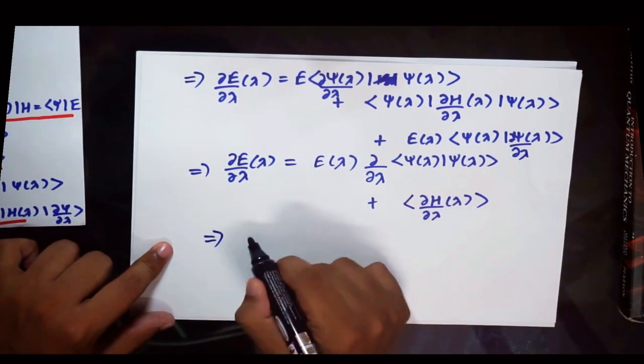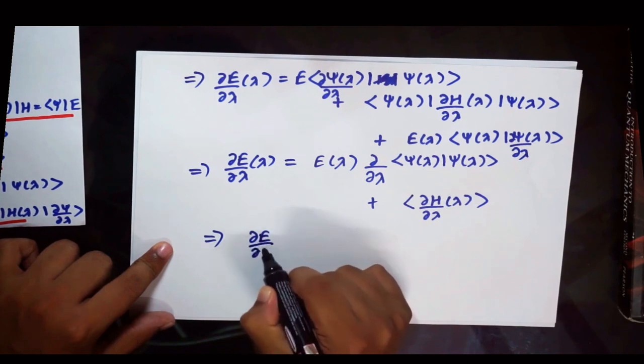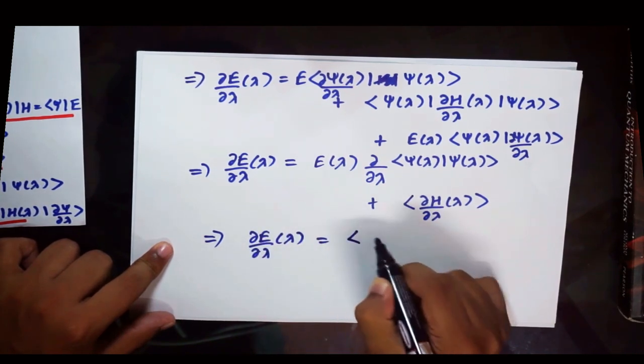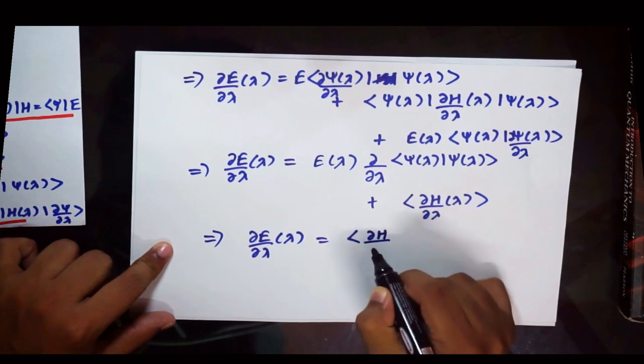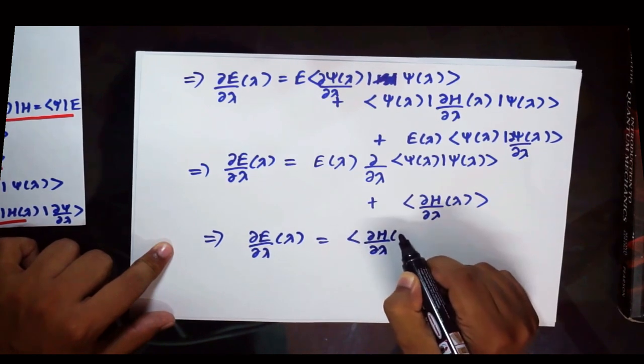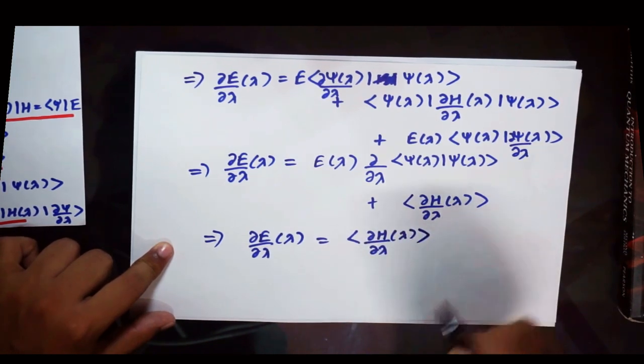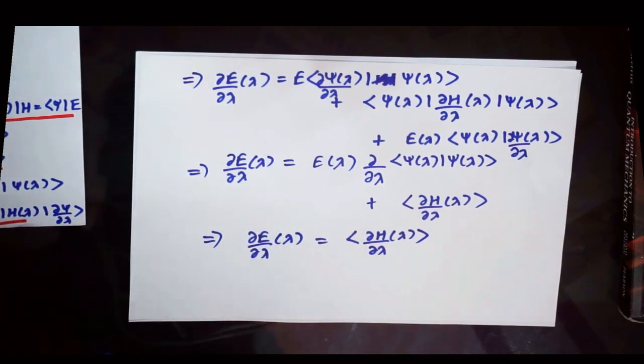So therefore we would get del E by del lambda equal to the expectation value of the derivative of the Hamiltonian with respect to lambda. So that's it, that is the very short proof of the Hellmann-Feynman theorem and easy to understand.